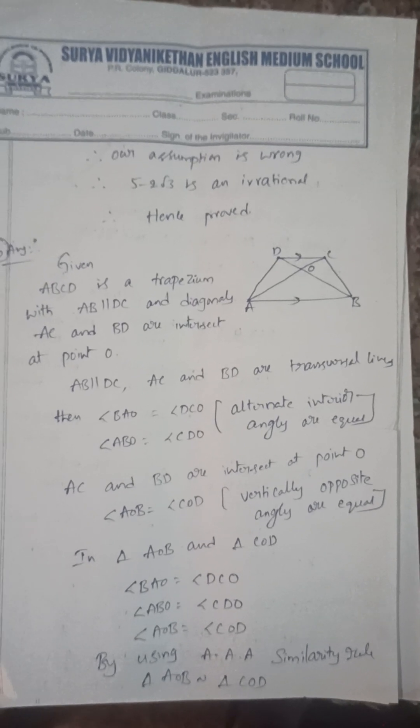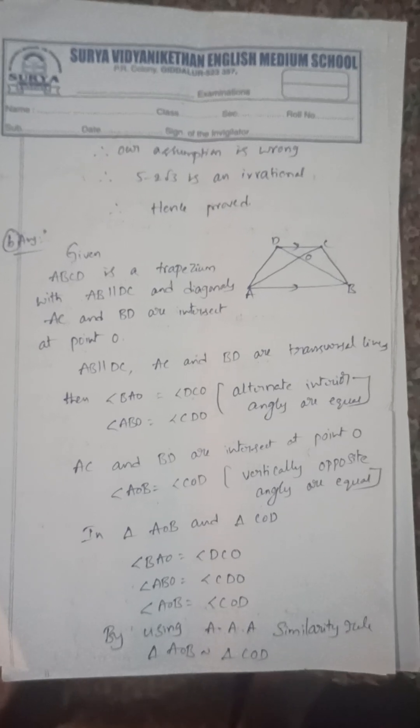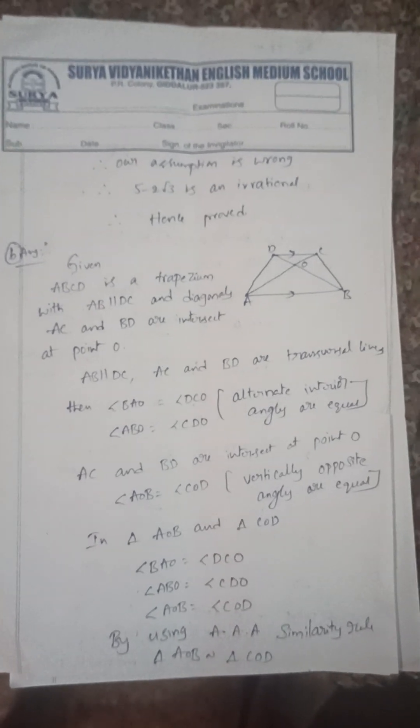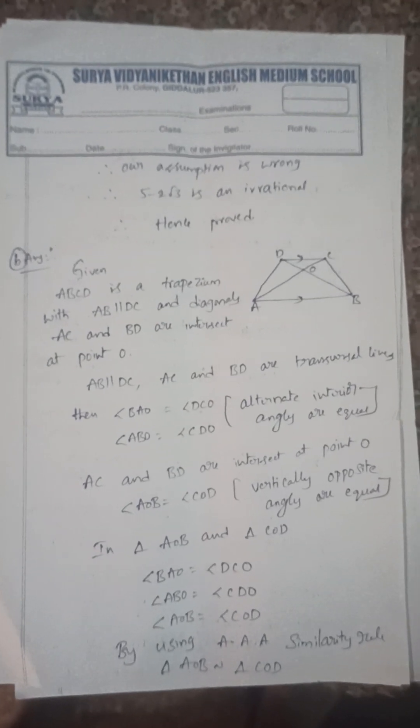Then triangle ABC and triangle DOC—by using angle-angle similarity, the two triangles are similar. Then the ratio of corresponding sides are equal and corresponding angles are equal.